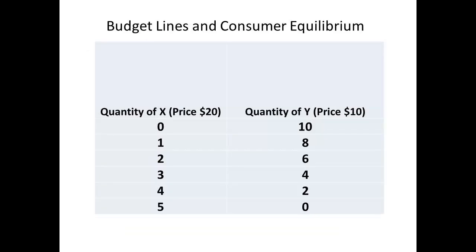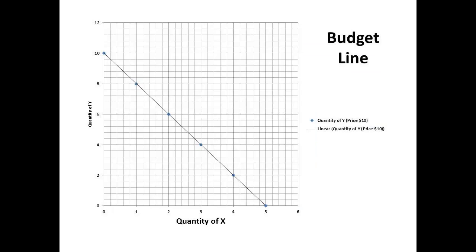An indifference curve tells us about a consumer's preferences, but how do we know which combinations are likely to be chosen? For this we need more information — we need to know about the income of our consumer and the prices of the two goods x and y. Suppose that our consumer has an income of $100. The table shows the combinations that the consumer can afford to buy with this income, and we can plot these on a graph. The result is called a budget line. In this example, two units of y are given up to buy each unit of x. If px is the price of x and py is the price of y, then px divided by py is the slope of the budget line.